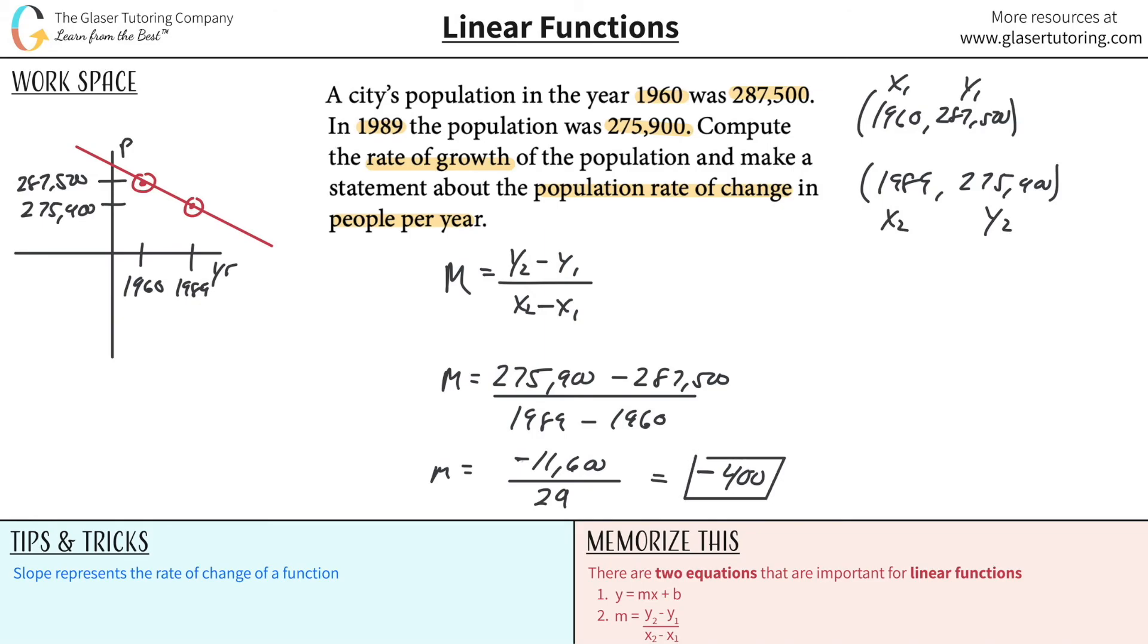And it changes by exactly negative 400. So meaning the slope is really negative 400. 400 what? Again, 400 people per year. So this city lost 400 people, on average, 400 people per year. And that result per year accumulated over 29 years resulted in 11,600 people leaving in total.